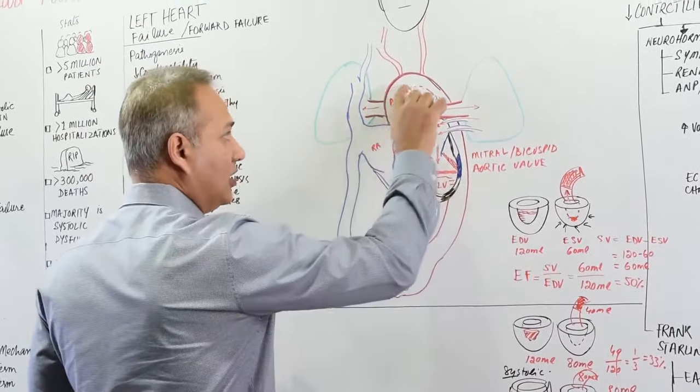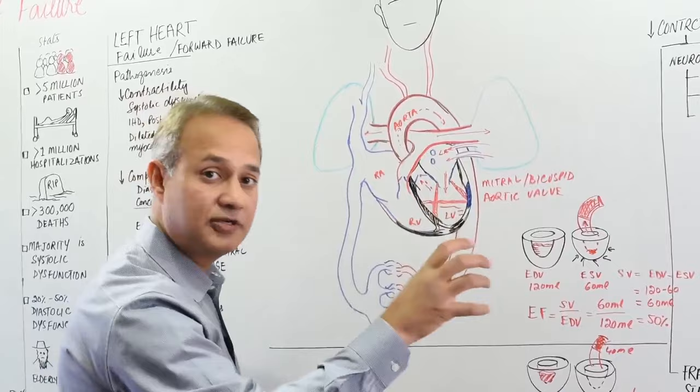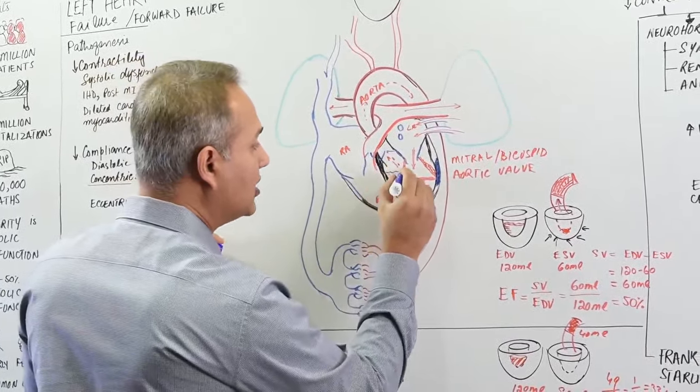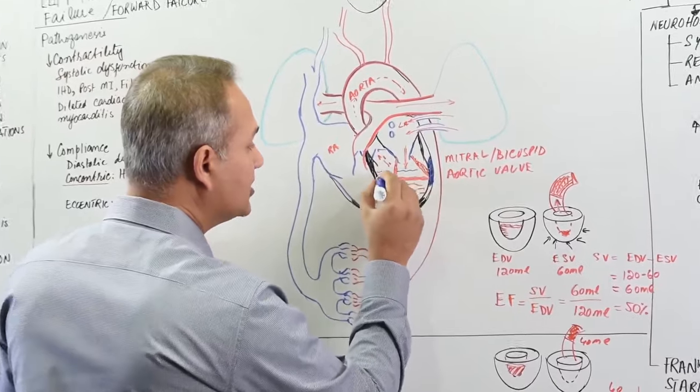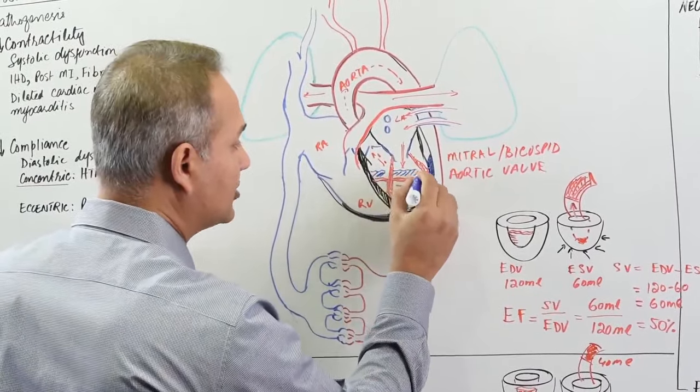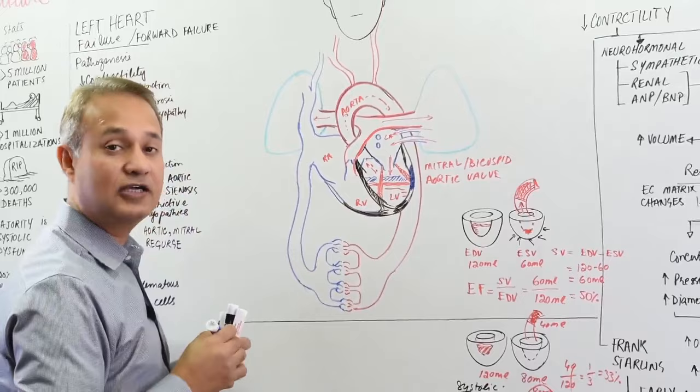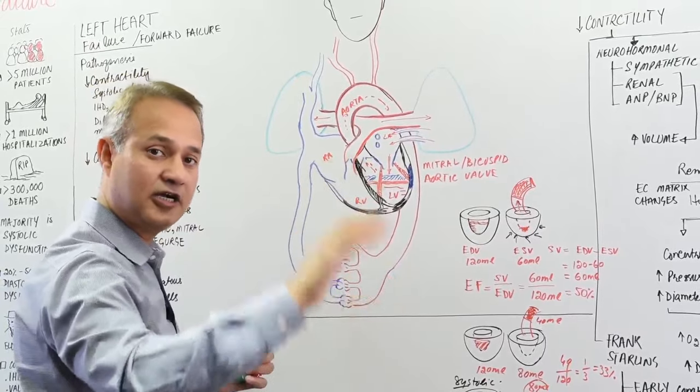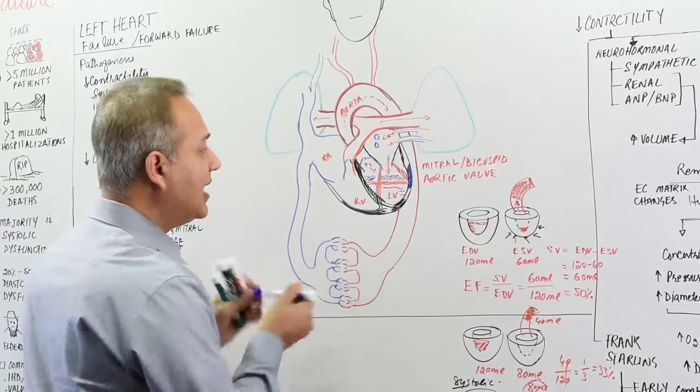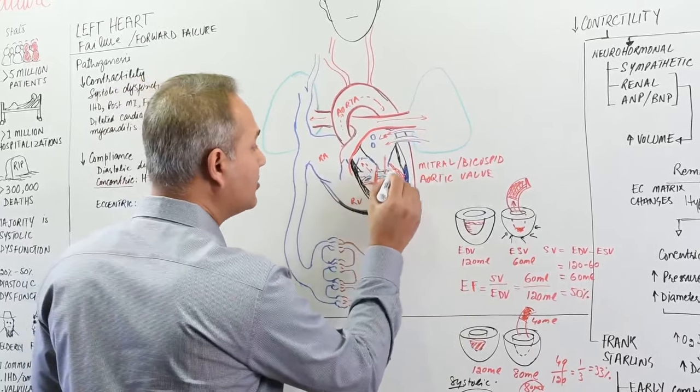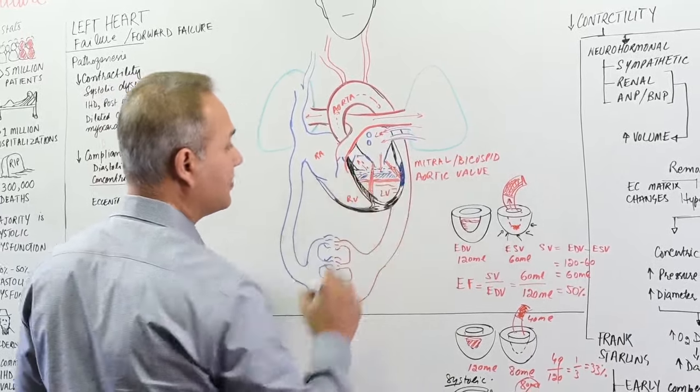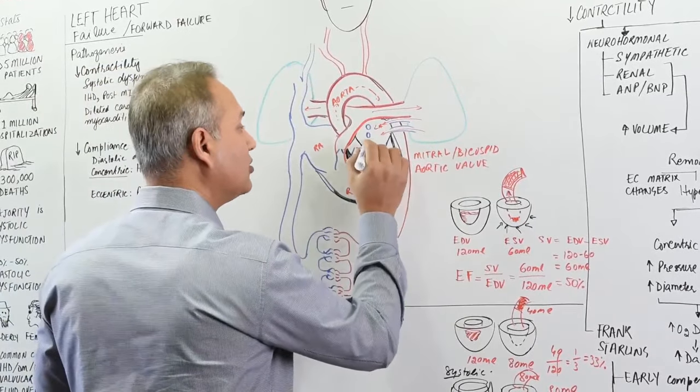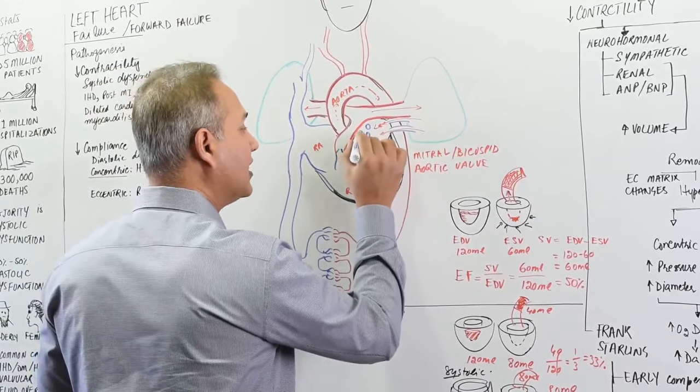Now as the systole progresses, systolic dysfunction progresses, what will happen? Blood will start pooling. I'm going to make blue colored blood here. What is this blue colored blood? It's not deoxygenated. It is that extra blood that could not be ejected. So ejection fraction has reduced, cardiac output has reduced, contractility is reduced. That extra blood is now pooling in the ventricle. That blood pooling in the ventricle will mean then slowly blood would start pooling in the atria.